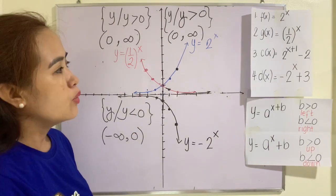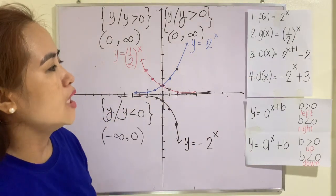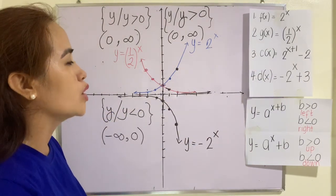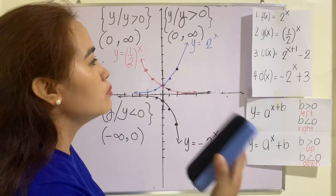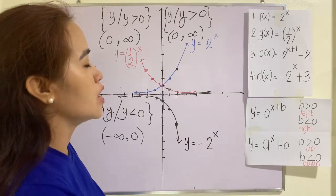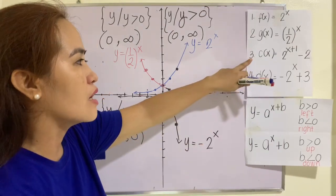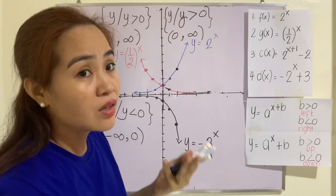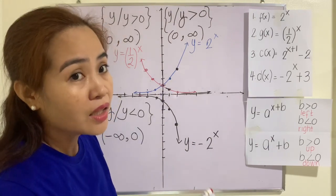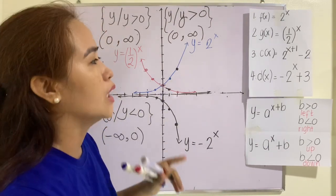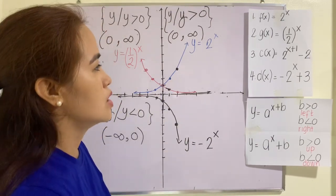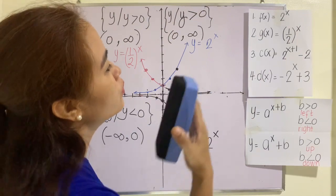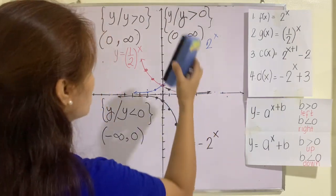Now, what about number three and number four? How are we going to get the domain and the range of that? As I have said, three and four — their domain is already the set of all real numbers. So how are we going to find the range? Let's do that.